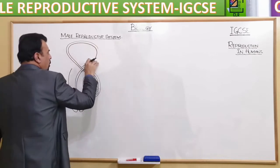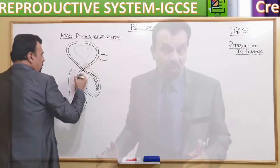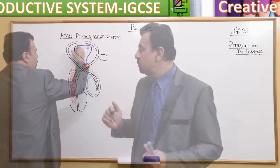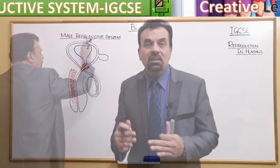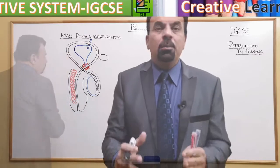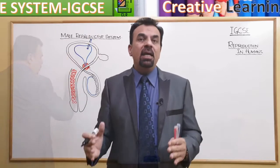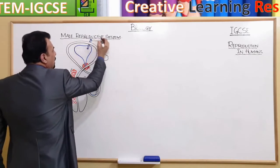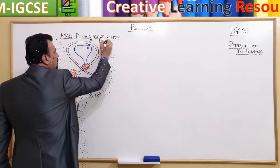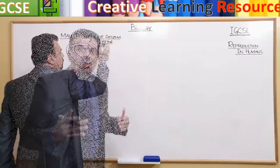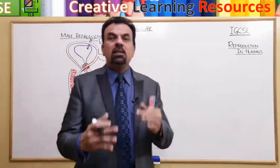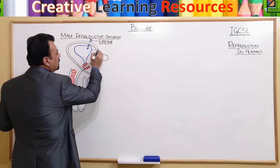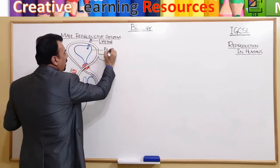Now we are going to label its different parts, and this labeling is very important because in the exam they're going to ask you to label different parts of the male reproductive organs. We start from the top. This one is called the ureter — its function is to transport urine from the kidney to the bladder. And now we can see this is the bladder, or urinary bladder.